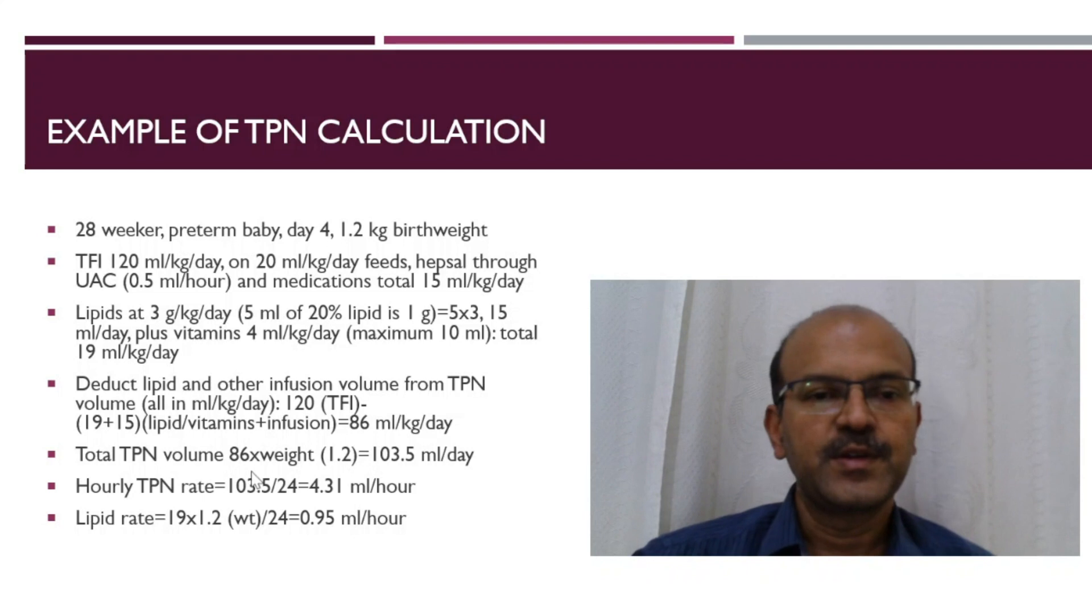The total parenteral nutrition volume of 86 times the weight of 1.2 is 103, the total fluid in the parenteral nutrition. The hourly TPN rate is 103 divided by 24, 4.3 ml. And the lipid rate is 19 times 1.2 divided by 24, so 0.95 ml. We usually give the lipids as a 24-hour infusion.